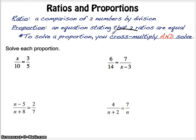To solve a proportion, you cross multiply and then solve the equation. So here, when we cross multiply, x over 10 equals 3 over 5. You have 5 times x and 10 times 3.